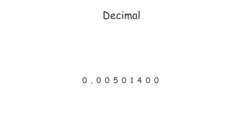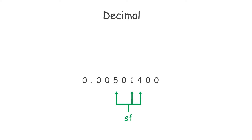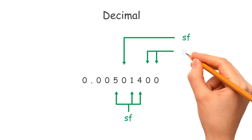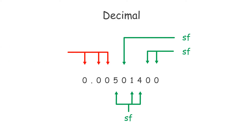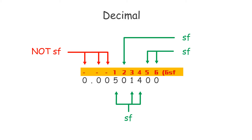Determine the number of significant figures of a decimal. Let's say there is a decimal 0.00501400. Applying the first point, all non-zero digits are significant figures. Applying the second point, the digit zero between non-zero digits is a significant figure. Note that decimals do not have the third point. Then apply the fourth point — zero at the end of a decimal is significant. Finally, apply the fifth point — zero before the first non-zero digit is not significant. Therefore, 0.00501400 has six significant figures.